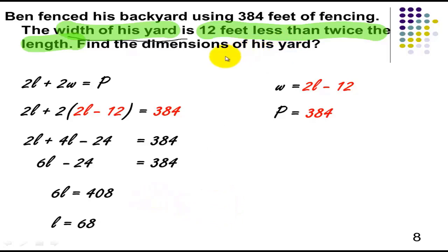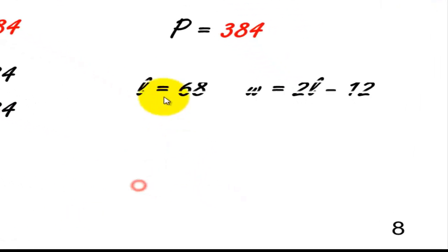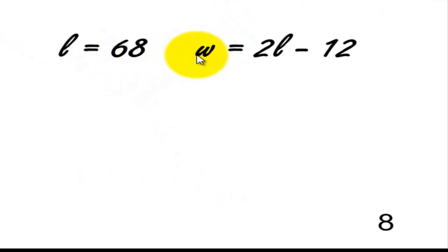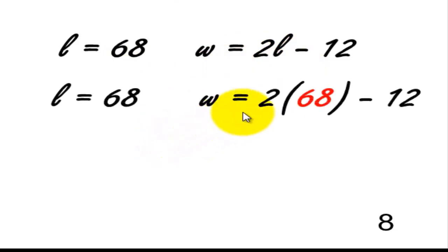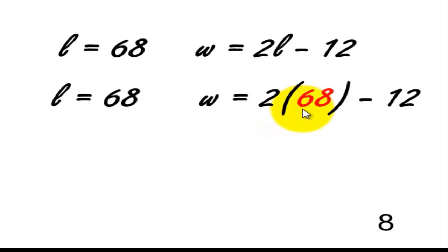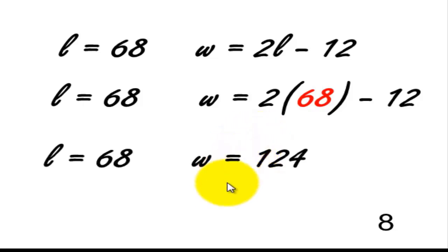Divide by 6 — you are going to get L equals 68. Remember, we are trying to get the dimensions; we only have the length so far. We have to find the width also. L is equal to 68. W is equal to 2L minus 12. Replacing L by 68: 2 times 68 minus 12. 2 times 68 is 136; 136 minus 12 gives us W equals 124.